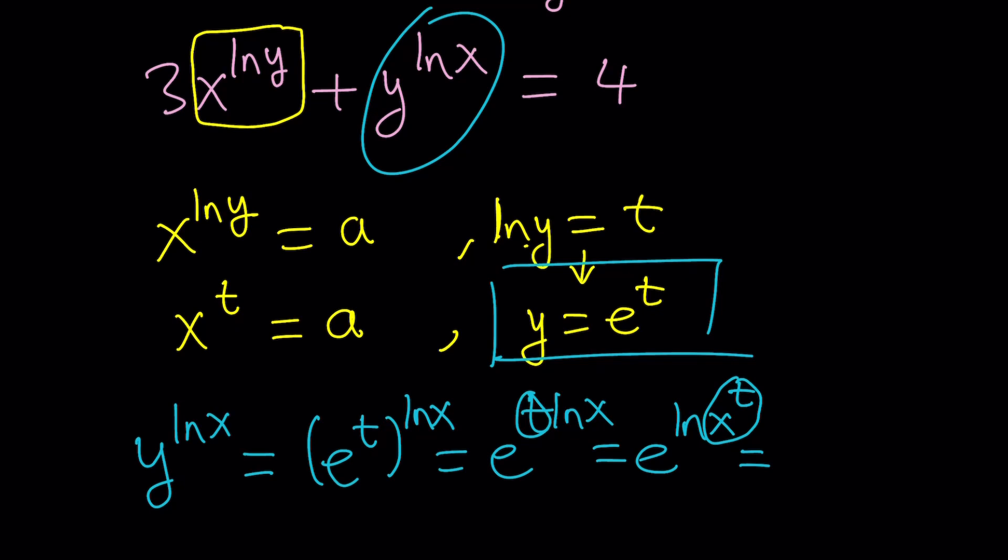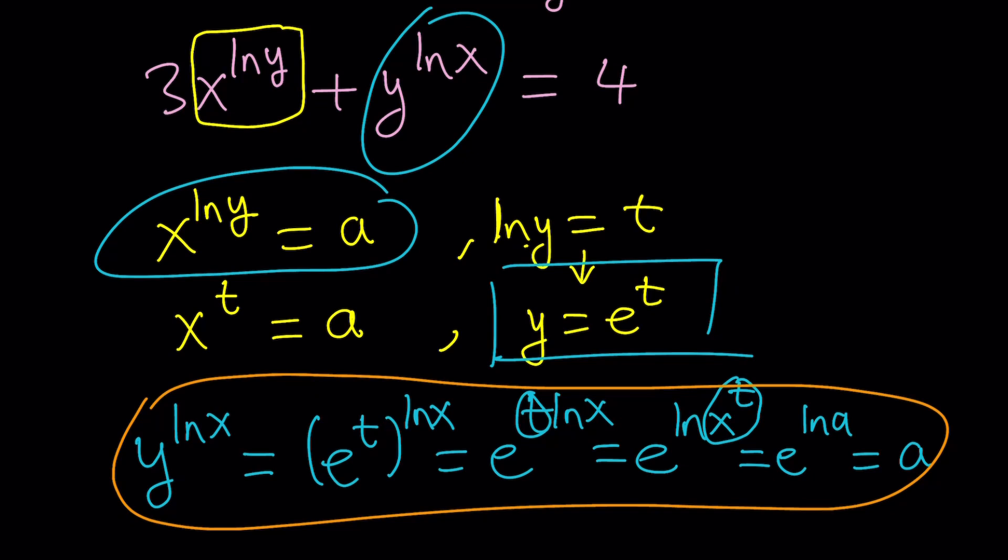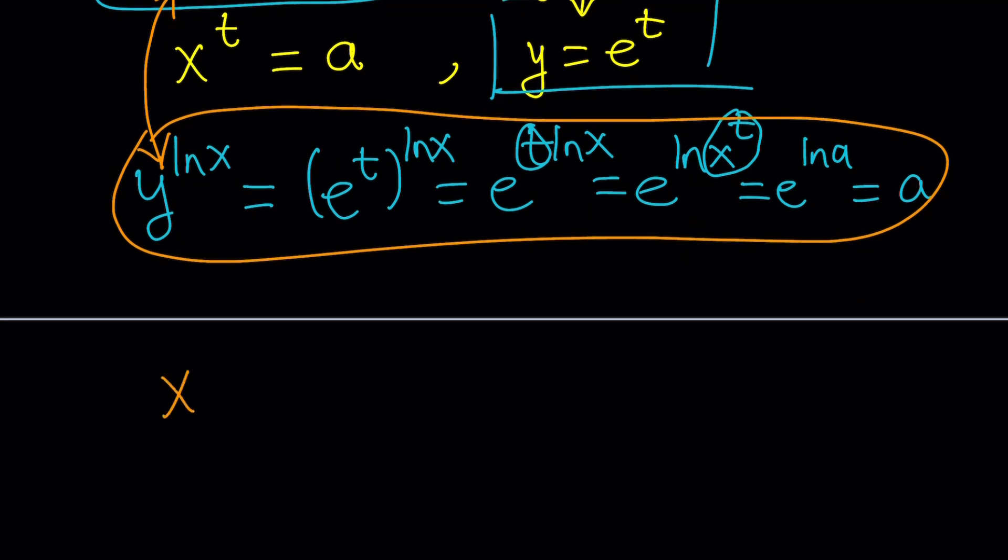Or, if you still want to do it differently, you can replace x to the t with a. You get e to the power ln a, which is a. Same thing. But what we got is significant because we just said, we assumed that x to the power ln y is equal to a. Now we got y to the power ln x equals the same thing. Now what is that supposed to mean? It means these two things are equal. So to keep a long story short, x to the power ln y and y to the power ln x are the same thing.